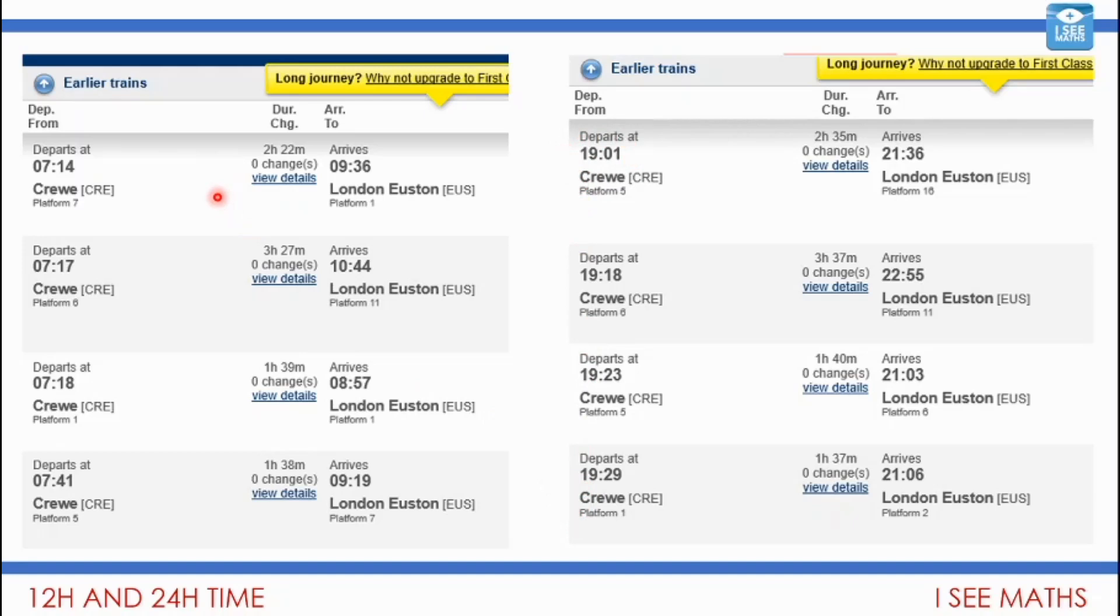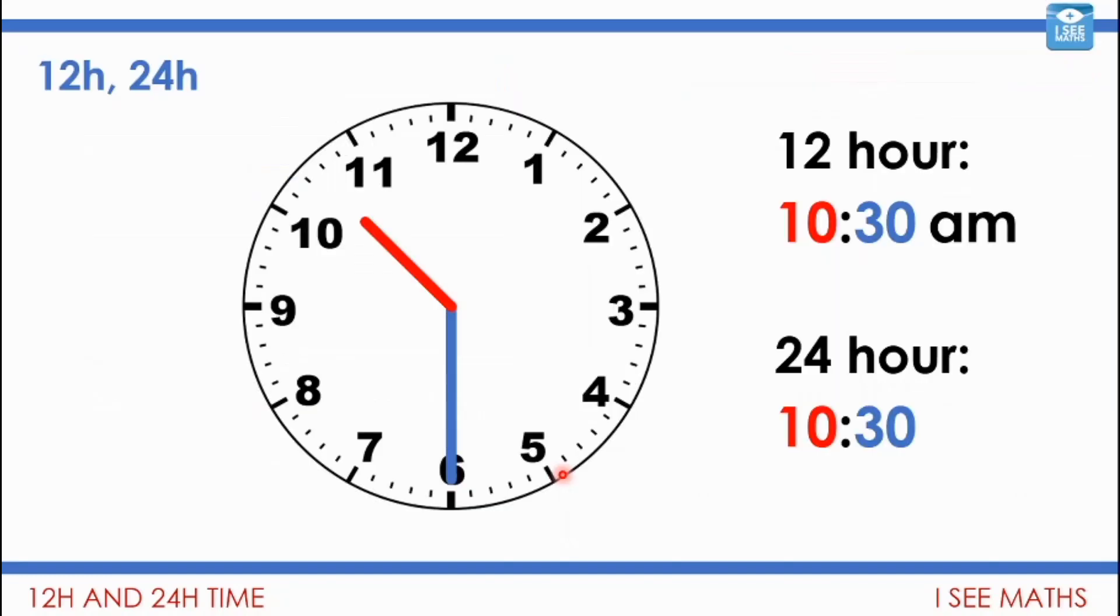So no one gets confused and thinks they're booking a train in the evening and actually they get a morning slot. It's far harder to confuse the times when you're doing something in advance using 24-hour time. But now I guess what we've got to be able to do is read clocks in both times.